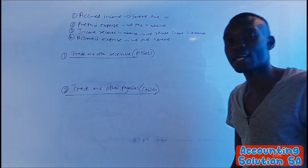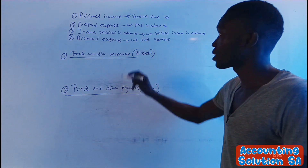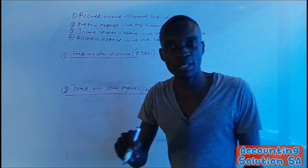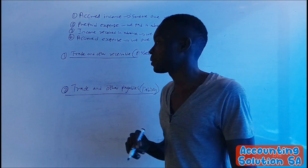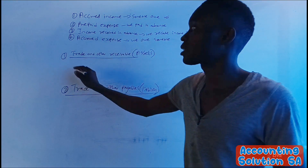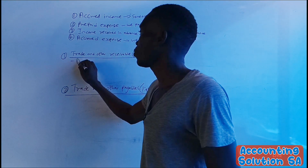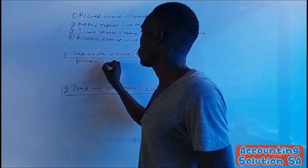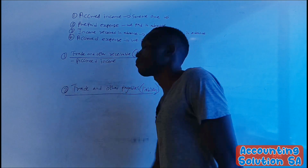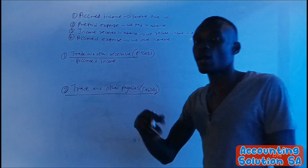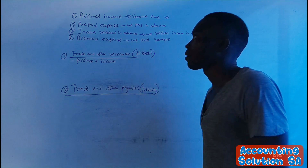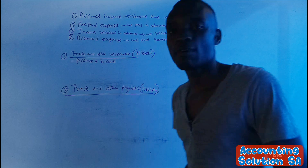With accrued income, someone owes us, which means we have the right to demand that money from that person. We don't owe anyone — someone owes us — which means accrued income is an asset.